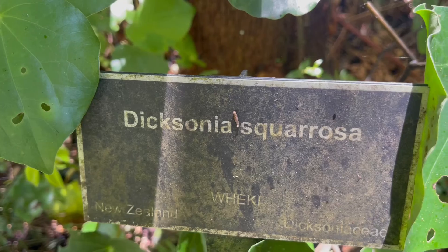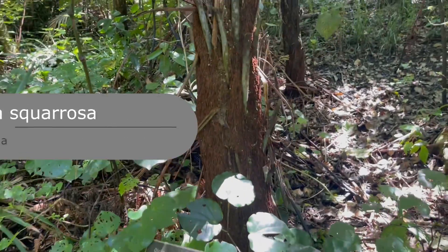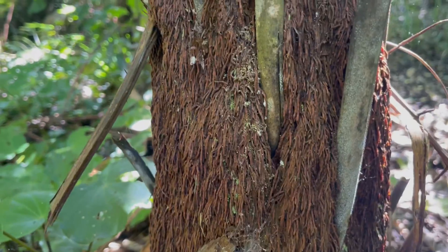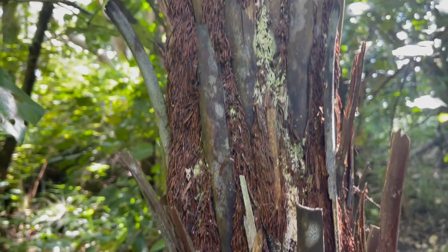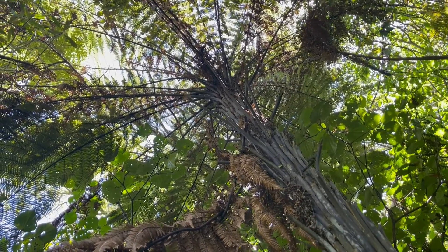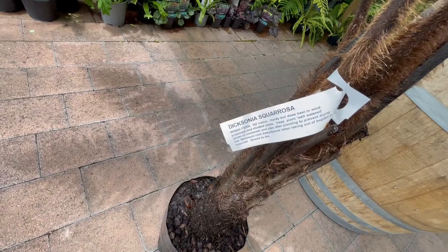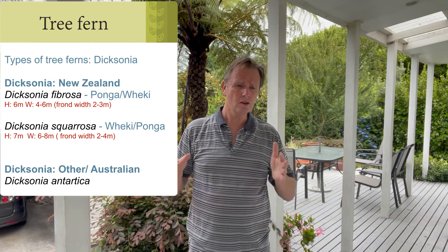The other Dicksonia is Dicksonia squarrosa — it has a thinner, darker trunk, and the stem remnants are more compact compared to the silver fern. There's also an Australian version called Dicksonia antarctica, which is also a very popular tree fern. These Dicksonias are smaller ferns, growing to around 6 to 7 meters in height and about 4 to 6 meters in width, making them very good plants for the garden.